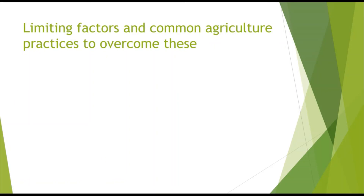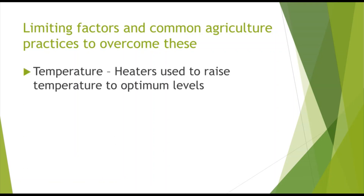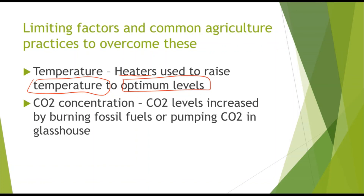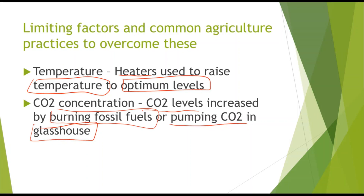There are limiting factors of photosynthesis, and common agricultural practices to overcome them. Temperature affects enzymes such as rubisco — paraffin heaters can raise temperature to optimum levels. CO2 concentration is a limiting factor as it combines with RUBP in the light-independent reaction — CO2 levels can be raised by burning fossil fuels to release CO2, or by pumping CO2 directly into glasshouses or greenhouses.